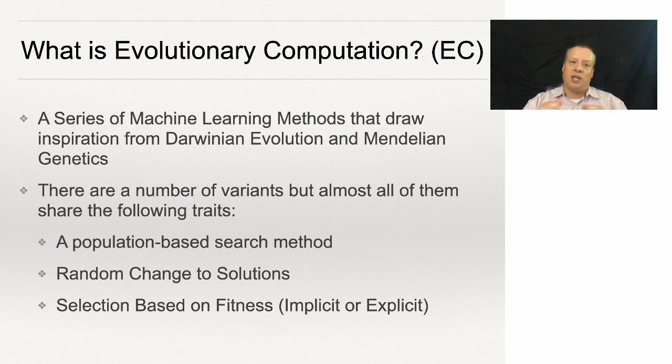There is a set of random changes to solutions, something that modifies them randomly over time to try and make them better. And there is a selection based on fitness, right? Individuals that are doing better at solving the problem continue to persist in the system, right?